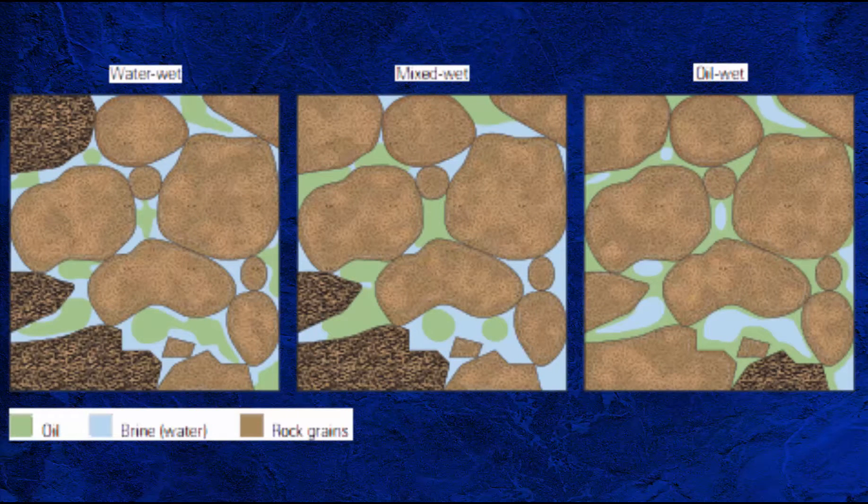In a homogenous, porous material saturated with oil and water, strongly water-wetting describes one end member of a continuum in which the surface strongly prefers contact with water. A strongly oil-wetting surface prefers contact with oil.